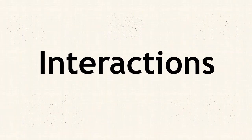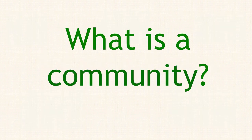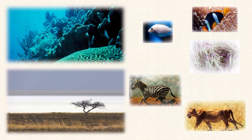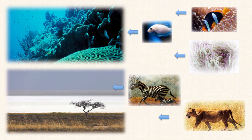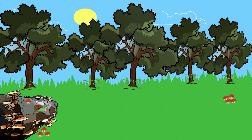Interactions are the effects organisms in a community have on one another. A community is defined as an interacting group of various species in a common location. For example, a forest of trees and undergrowth plants, inhabited by animals and rooted in soil that contains bacteria and fungi, constitute a biological community.